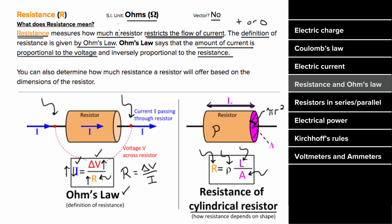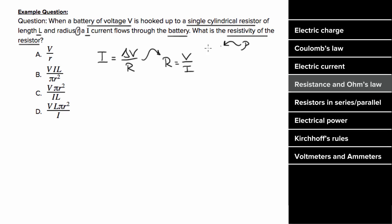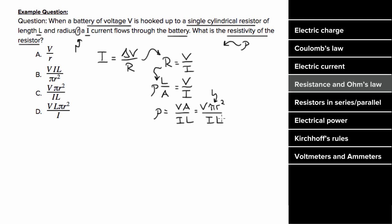So what's an example problem involving Ohm's Law or the resistance of a cylindrical resistor look like? Let's say a battery of voltage V is hooked up to a single cylindrical resistor of length L and radius little r, and a current I is flowing through the battery. What is the resistivity rho of that resistor? Well, we know Ohm's Law states that the current that flows through a portion of a circuit equals the voltage across that portion divided by the resistance. This means the resistance is going to be V over I. Using the formula for a cylindrical resistor, rho times L over A, we set rho L over A equal to V over I, and solve for rho to get V times A over I times L. Since we're given the radius little r, we write the area as pi r squared, giving us rho equals V times pi r squared divided by I times L, which gives us answer C.